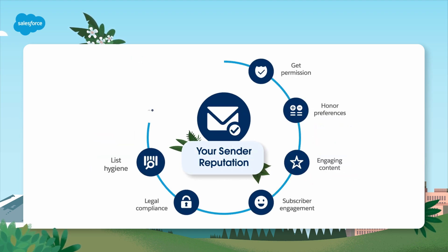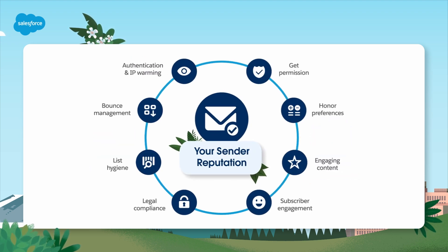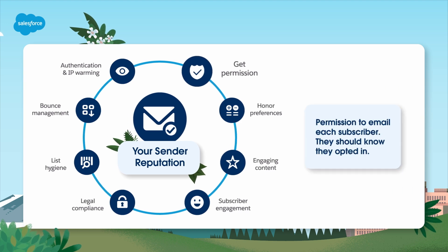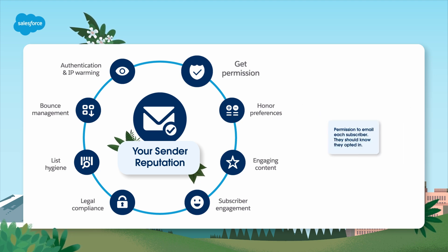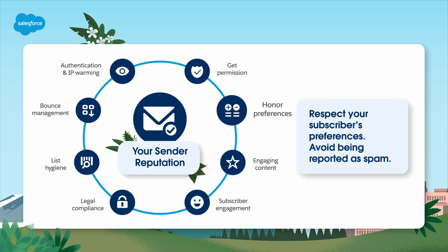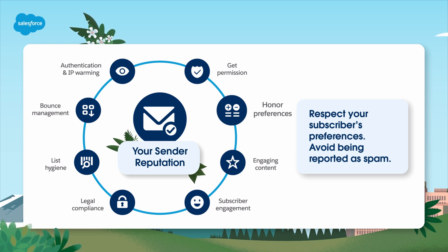Here's what to do to build and maintain a positive sender reputation. Get permission — ensure you have explicit permission to email each subscriber. They should know they opted in and be eager to keep hearing from you. Honor preferences — listen to your subscribers' preferences and offer options about email frequency. Give them easy ways to turn up or down the number and types of emails they get from you, or to opt out altogether. It's better to part peacefully with subscribers than to have them report your email as spam.